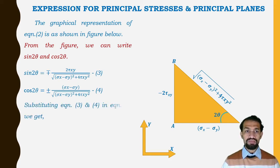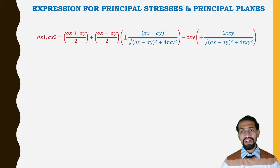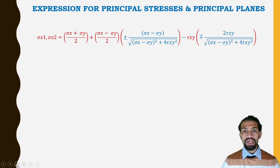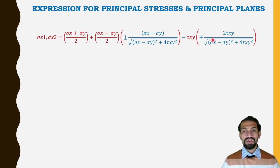Substituting Equations 3 and 4 into Equation 1 — replacing sin2θ and cos2θ with their expressions — we get σx1, σx2 = (σx + σy)/2 plus the term (σx − σy)/2 multiplied by ±(σx − σy)/√[(σx − σy)² + 4τxy²], minus τxy multiplied by ±2τxy/√[(σx − σy)² + 4τxy²].